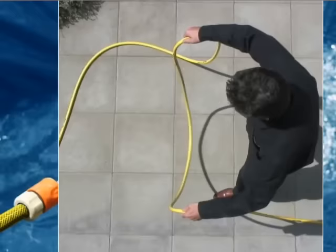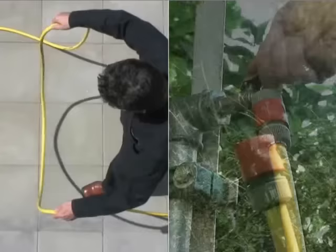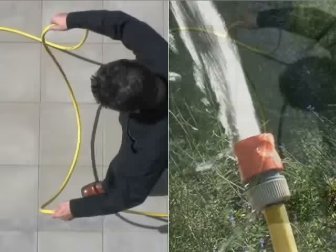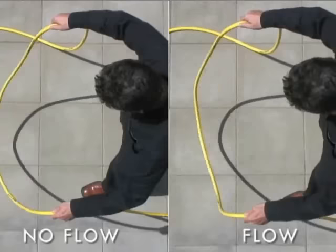But when a water flow is turned on, the water is forced through the swinging hose. The hose twists as a result of the changing angular velocity in the curved hose. That's the Coriolis effect in action.